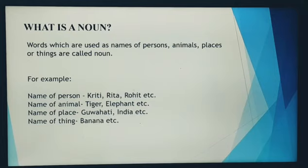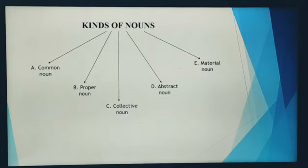Deer, elephant, or names of places like India, Guwahati, Delhi, etc. are all nouns. Coming to the kinds of noun, there are mainly 5 kinds of noun.